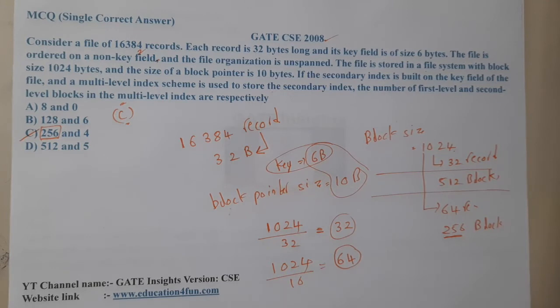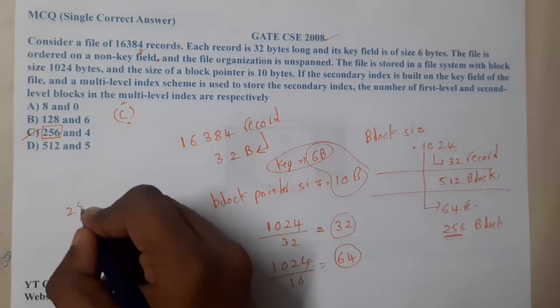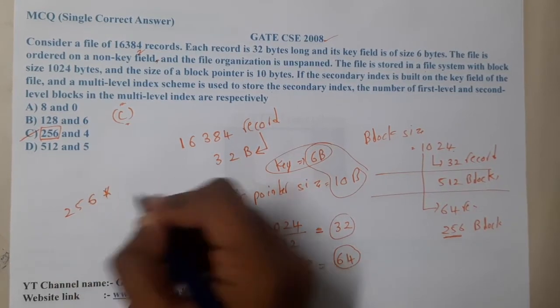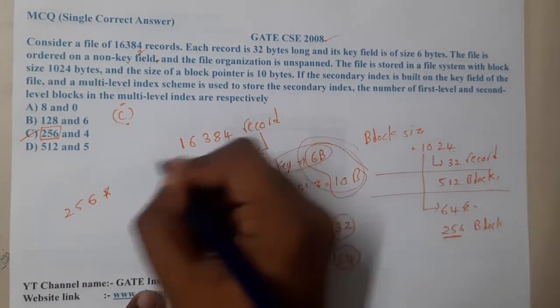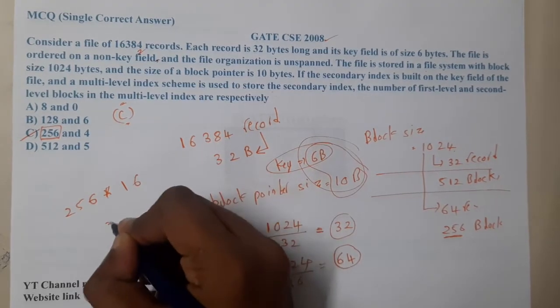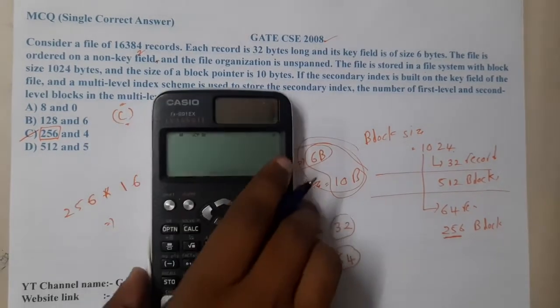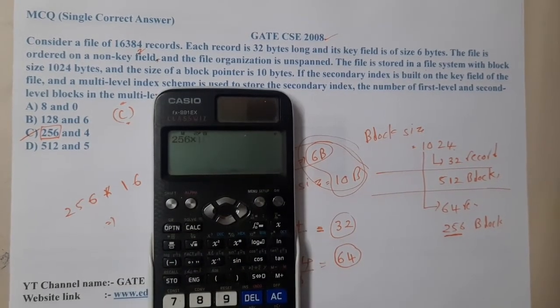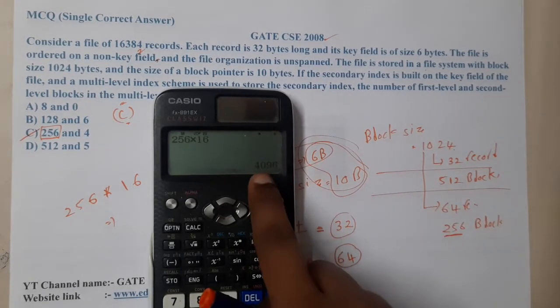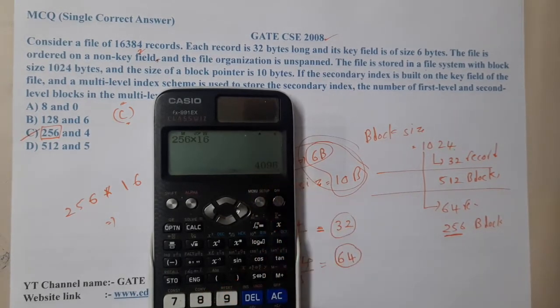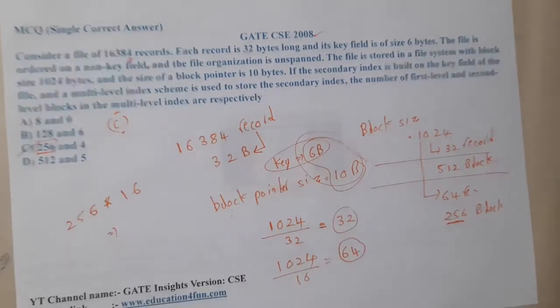But as this thing is not in our required order, I think we need to take all the entries here. As this size is 256, if I multiply with my entry size, that is nothing but 16 value here. What is the result? Let us calculate. 256 into 16 - I am calculating for second index - so it is 4096. If I divide it by 1024, it is nothing but 4.